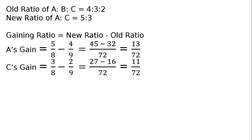C's gain: 3 by 8 minus 2 by 9. New share ratio 3 by 8, old share ratio 2 by 9. That is equal to LCM 72. Numerator will be 9 × 3, 027 minus 8 × 2, 016. That is equal to 11 by 72.